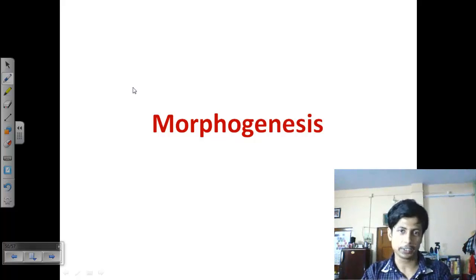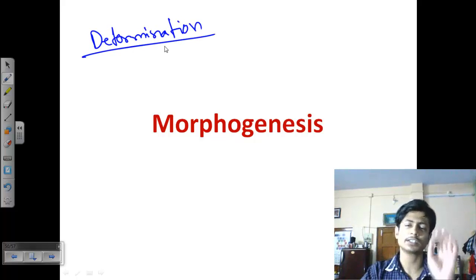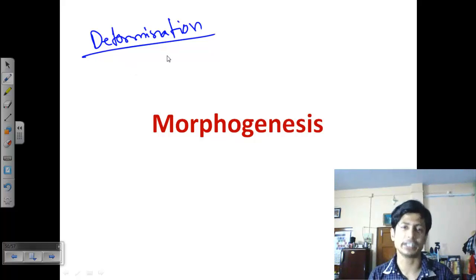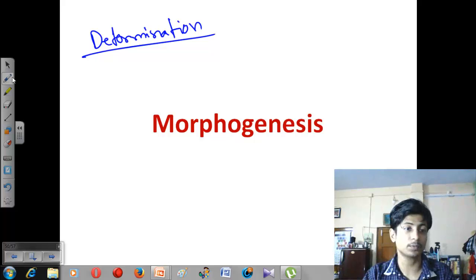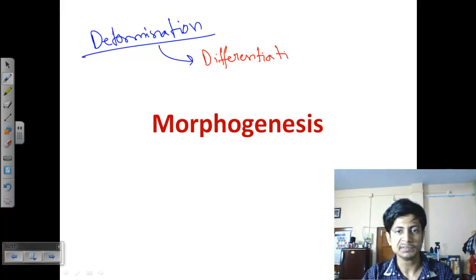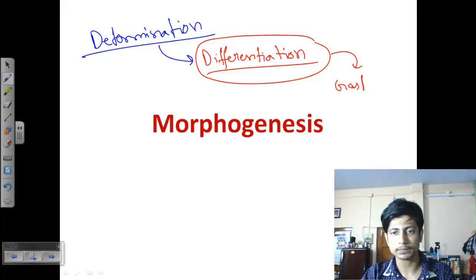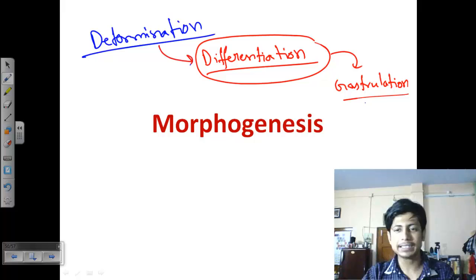The germ layers then differentiate to produce different organs. Determination means the cells are destined to produce specific organs or specific mature structures. Determination is required for the differentiation of cells. Once differentiation of cells is done properly, they mature through the gastrulation phase, and then morphogenesis takes place.